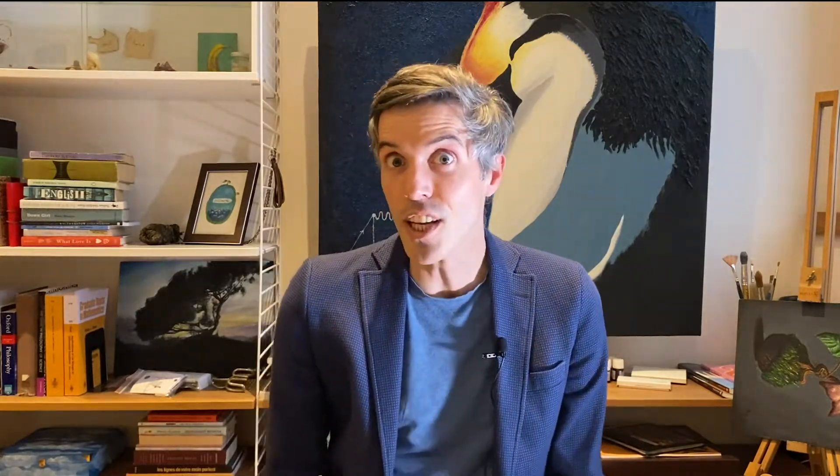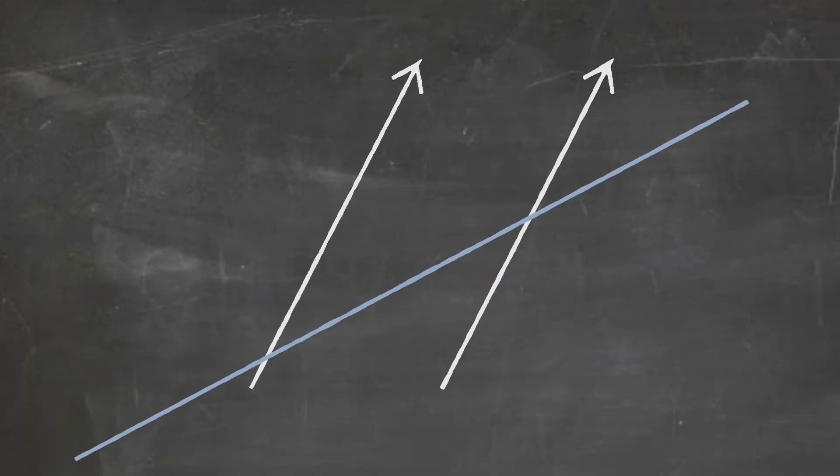And the faster that ruler moves with respect to the Earth, the shorter it gets in the Earth's reference frame. That's length contraction. It follows immediately from the relativity of simultaneity, viewed here as tilting hypersurfaces for moving observers.